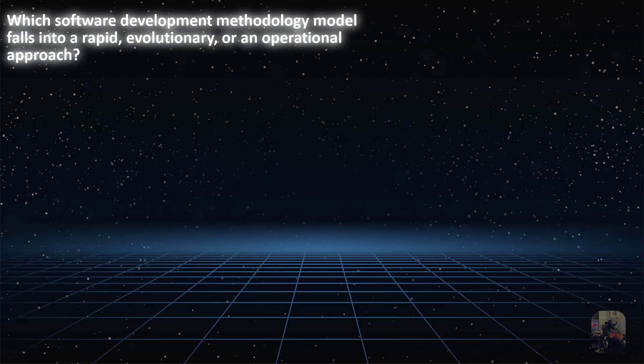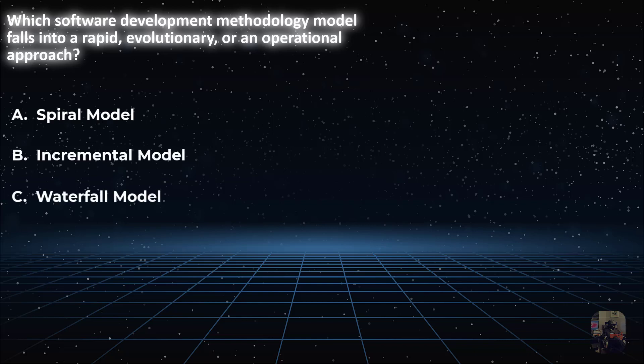Which software development methodology model falls into a rapid, evolutionary, or an operational approach? Is it choice A, spiral model? Is it choice B, incremental model? Or is it choice C, waterfall model? Or choice D, prototyping?